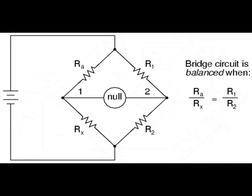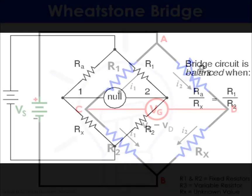When the bridge is balanced, the voltage across the galvanometer is zero, meaning there's no current flowing through it. This balance occurs when the ratio of the two parallel resistors equals the ratio of the two series resistors.